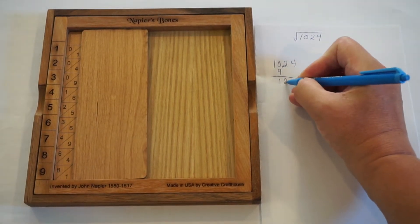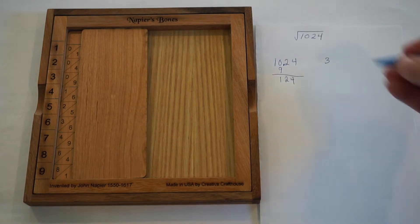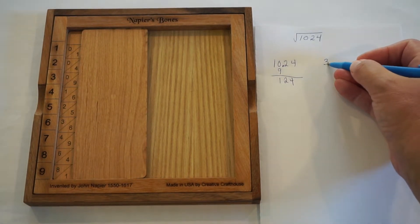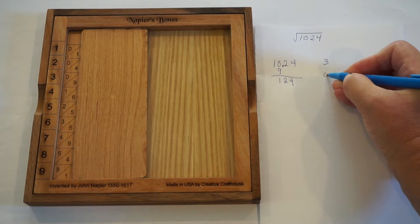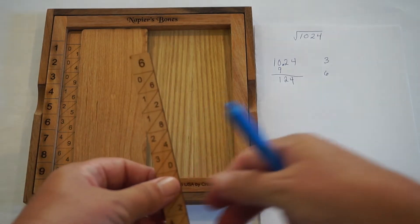We're going to subtract and bring down. Now to do the next step, what we need to do is take the first digit of our answer and double it. That gives us a 6. And what that 6 does is it tells us what rod to bring in next.